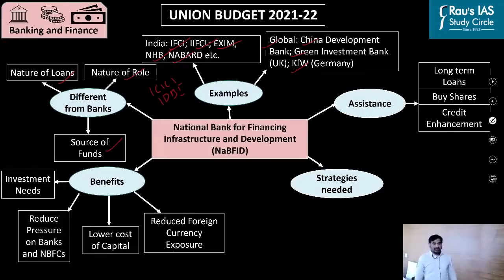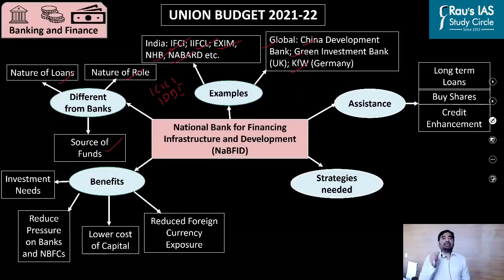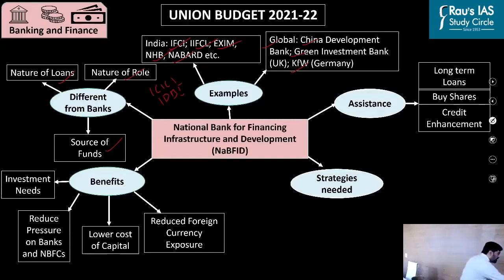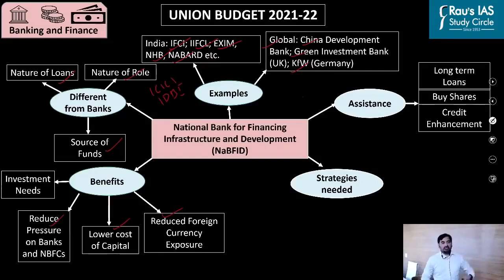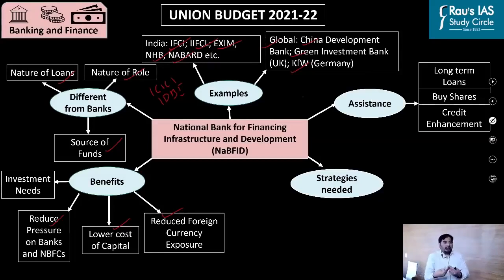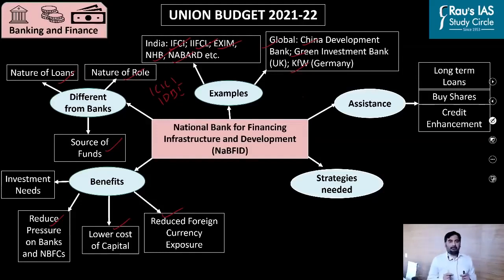Looking at the benefits: the government has come up with the ambitious National Infrastructure Pipeline, which seeks to spend almost 102 lakh crore over five years. A development bank will help meet these investment needs, reduce pressure on banks and NBFCs, lower the cost of capital, and reduce foreign currency exposure — meaning when infrastructure companies borrow in dollars and the rupee depreciates, it becomes an extra burden, which this helps reduce.